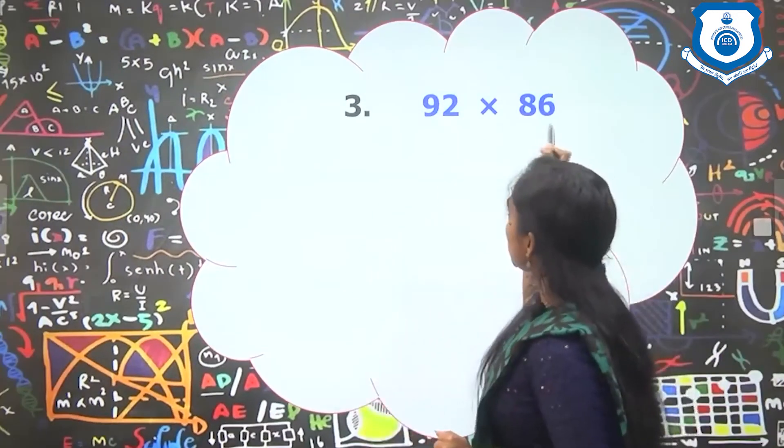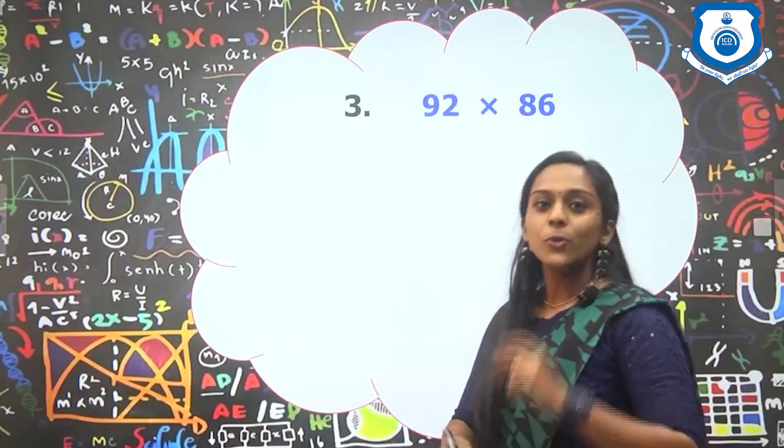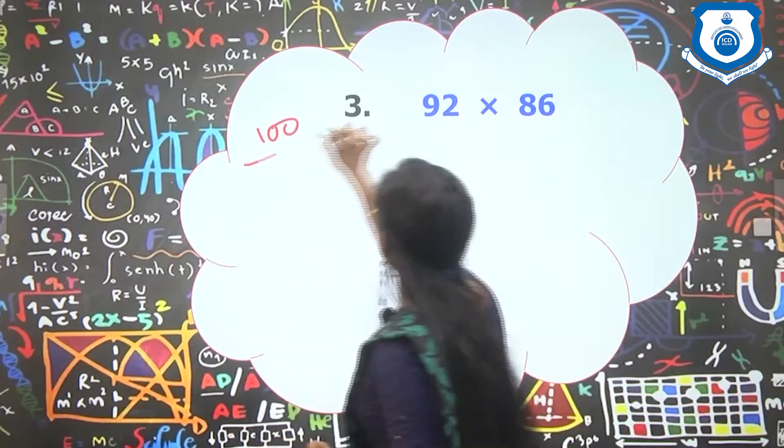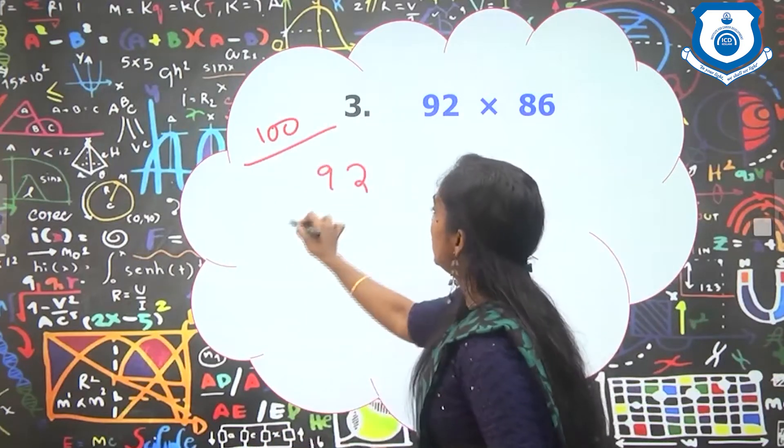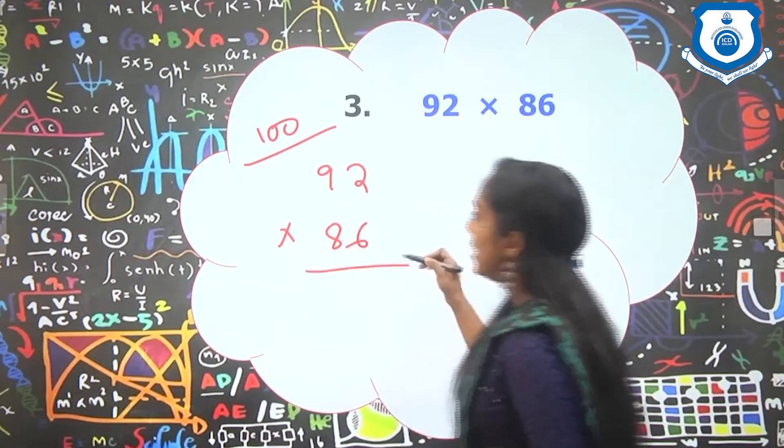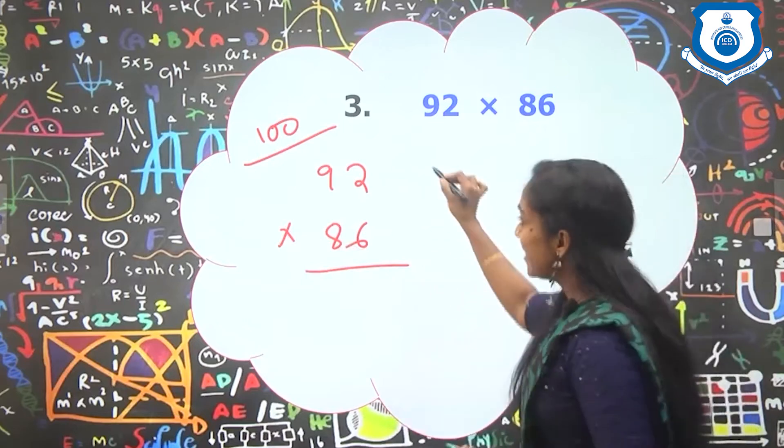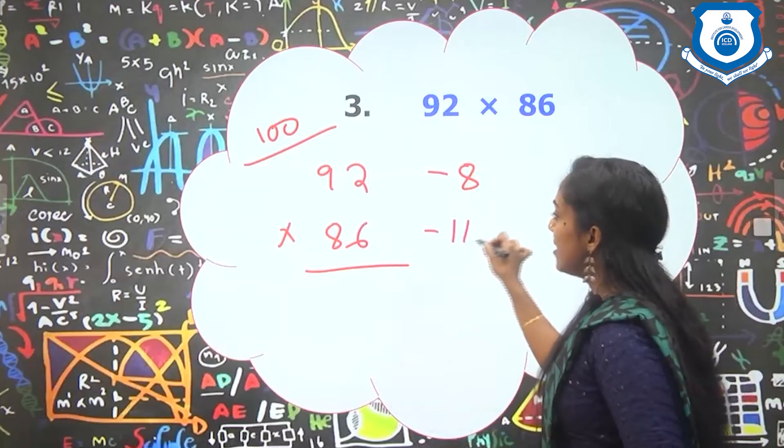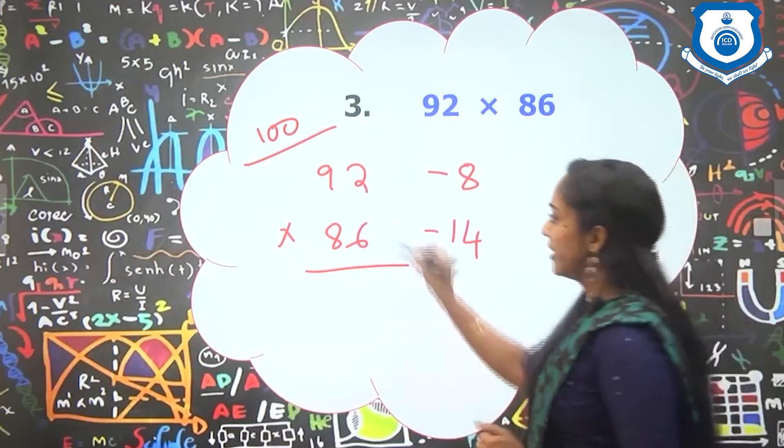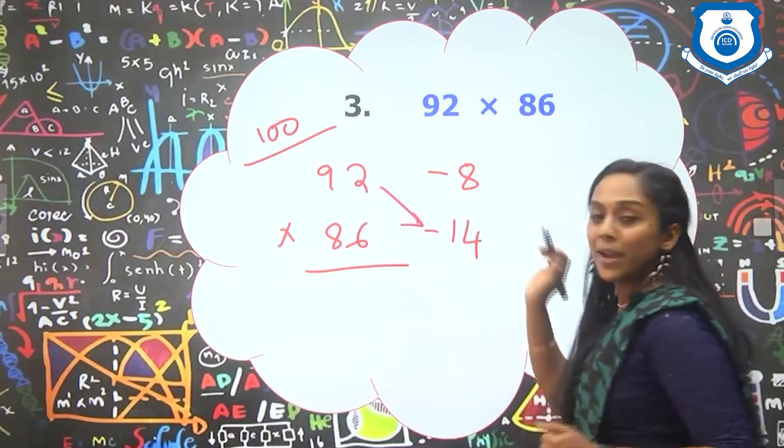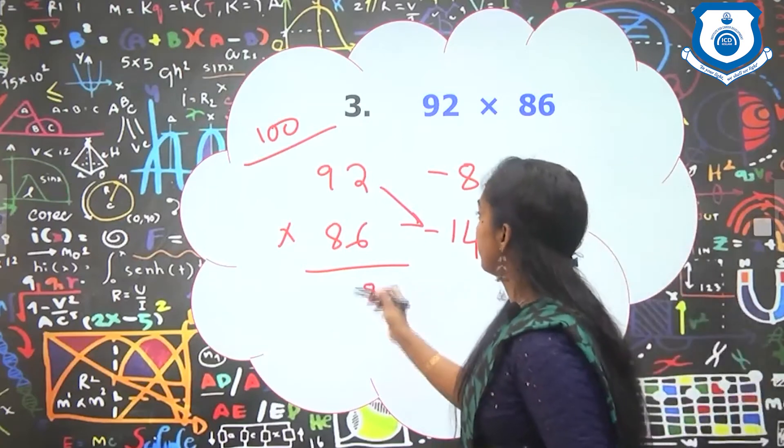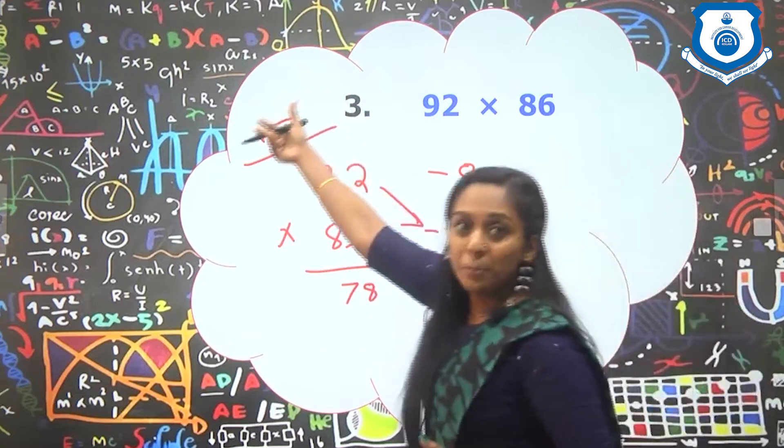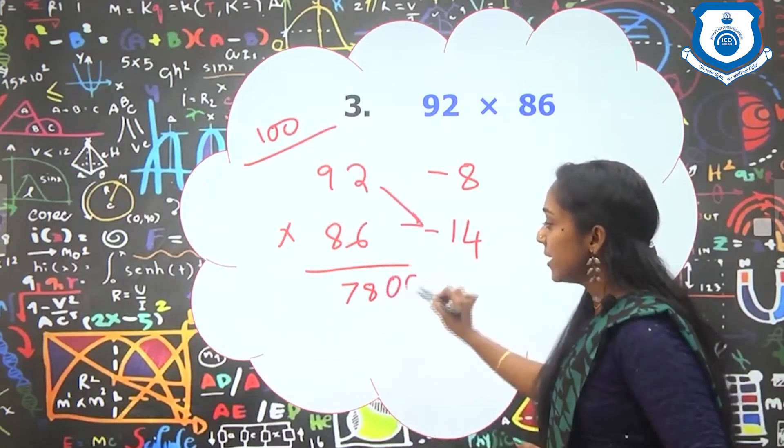Question number 3: 92 into 86. Here also both these numbers are coming into the base 100. So I am choosing the base as 100. So 92 is 8 less than 100. So this is minus 8. And 86 is 14 less than 100. So that is minus 14. Second step, 92 minus 14. So this will be 78. Now 78 into our base 100. So 2 zeros are there.